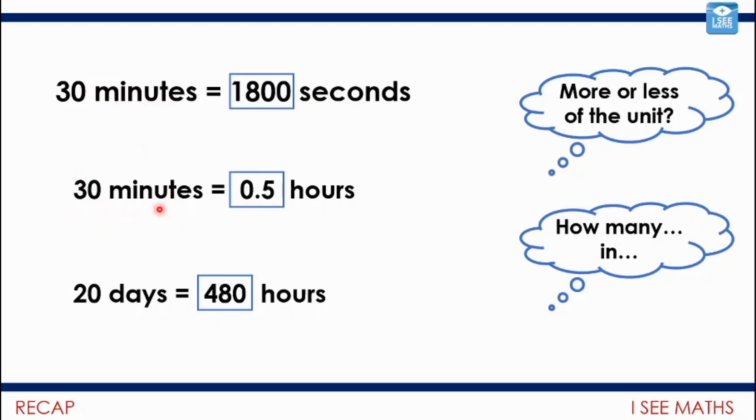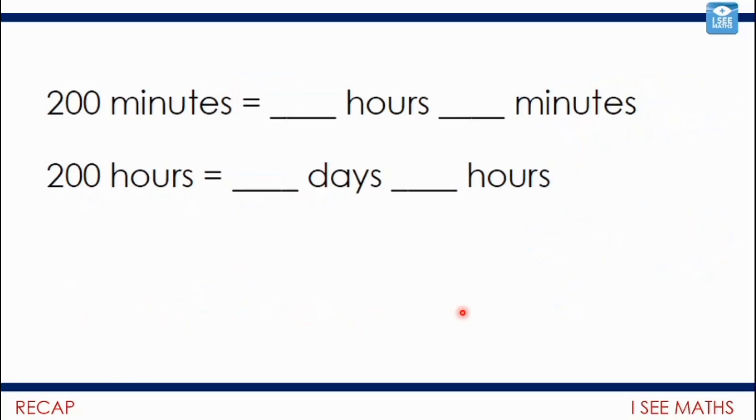We also looked at converting between minutes and hours. Minutes are shorter and hours are longer, so it won't be as many hours. In fact, it's even less than one here. Similarly converting between hours and days. This is one of the questions you had a go at in the tasks. 200 minutes, how many hours and minutes? Linking back to our division, there'd be 3 full hours, that's 180 minutes, and 20 minutes. What about 200 hours? It would be 8 full days because 8 times 24 is 192, and then another 8 hours.